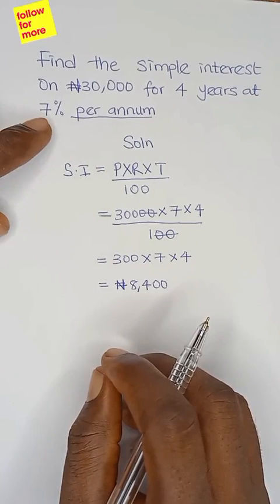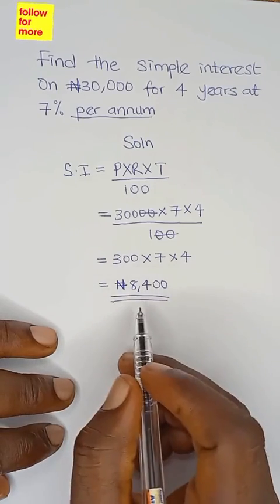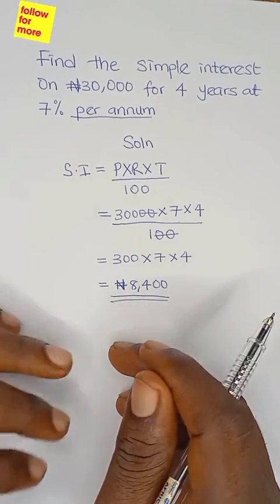This means that ₦30,000 borrowed for four years at a rate of 7% per annum will produce an interest of ₦8,400.